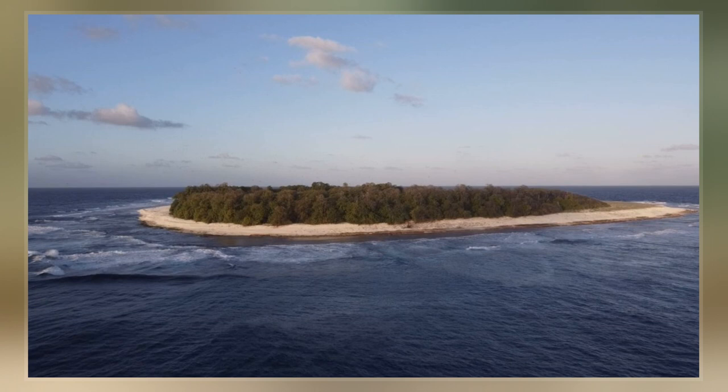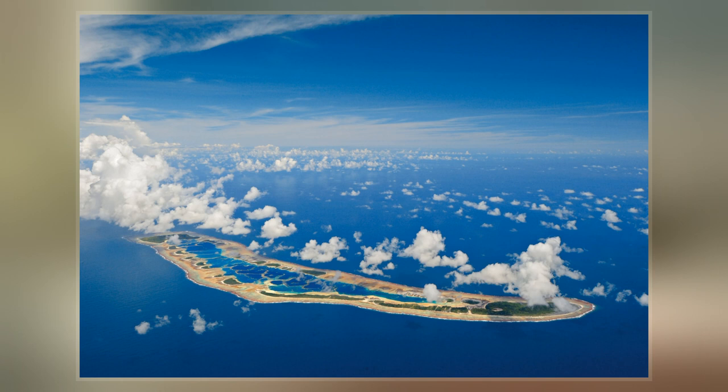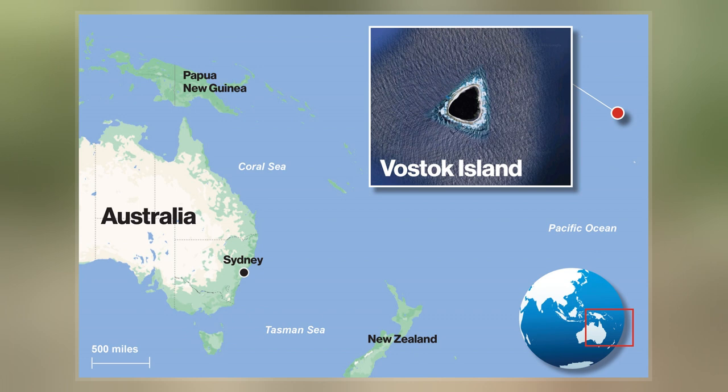Vostok covers a land area of 24 hectares. Its nearest neighbors are Flint Island, 158 kilometers south-southeast; Caroline Atoll, 230 kilometers to the east; and Penrhyn, 621 kilometers to the west.